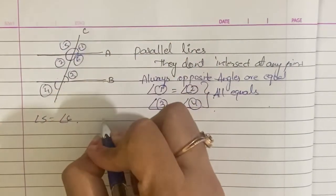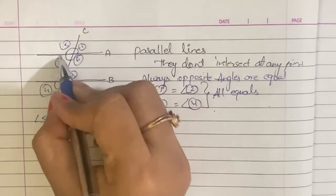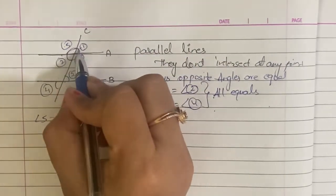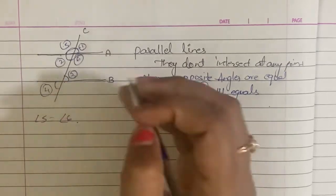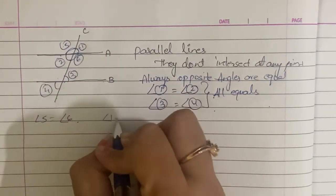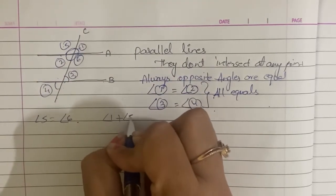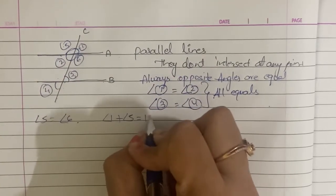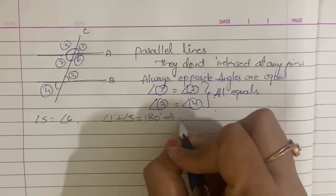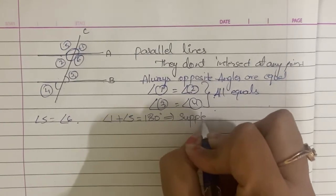If Angle 1 and Angle 2 — the sum of the angles is 180 degrees, so Angle 1 plus Angle 5 is equal to 180 degrees. These are supplementary angles.